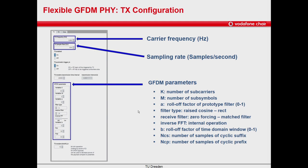In GFDM, we perform time domain windowing, and B refers to the rolloff factor of the time domain window — it can take values between 0 and 1. NCS is the number of samples of the cyclic suffix, and NCP is the number of samples of the cyclic prefix.